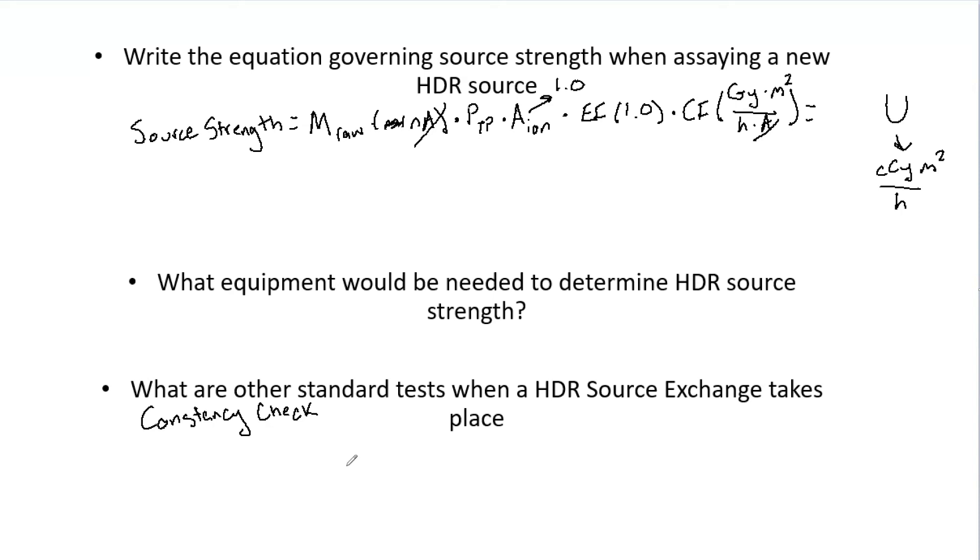So essentially, you have an old source that you know what the activity is. So by setting up your chamber and electrometer, verifying that you're going to get the same source strength when you already know what it is, you can say my chamber, my electrometer, my setup works, that those things are working correctly. And when I get my new source, if that activity is off for some reason, it's not my equipment, it's something with the source. So that is one thing you definitely have to do.